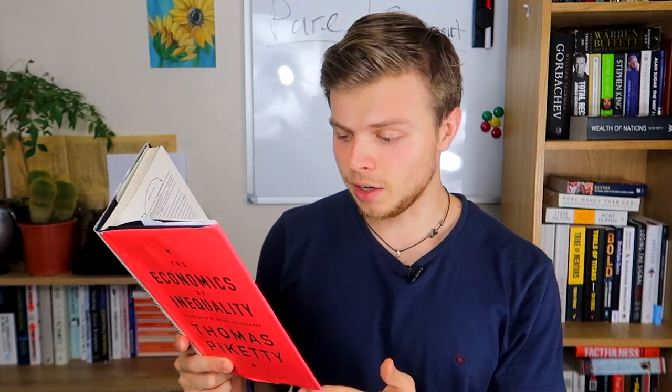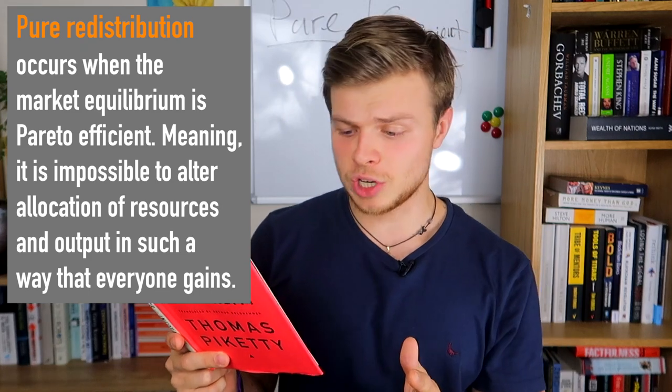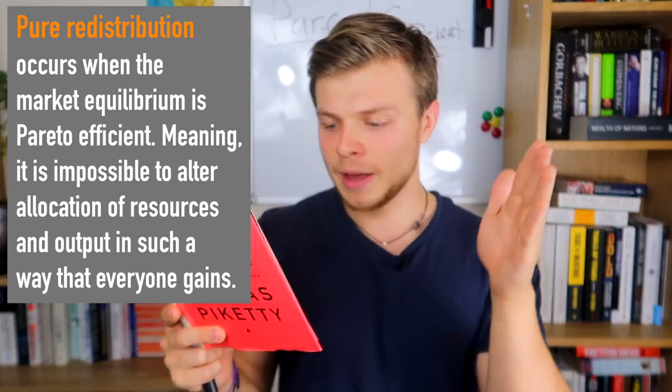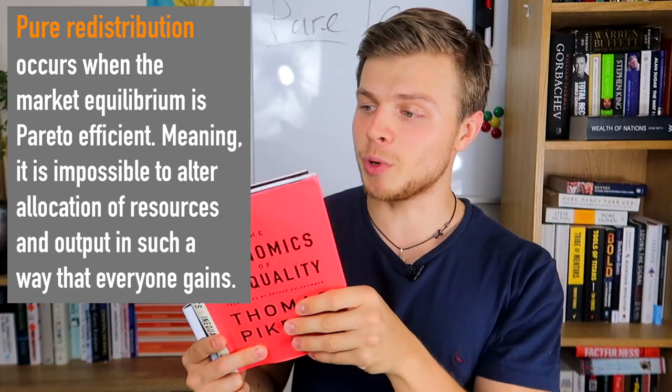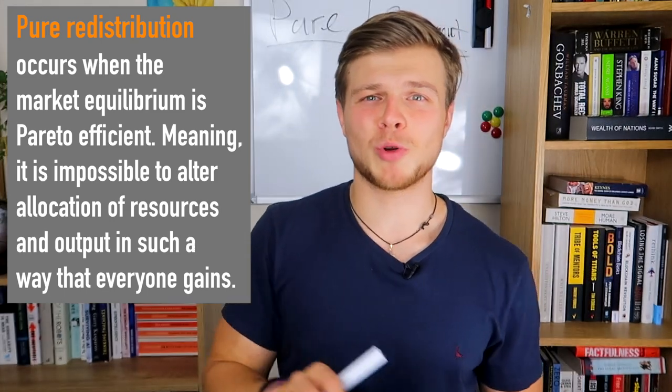The definition of pure redistribution given by Piketty is that it occurs when the market equilibrium is Pareto efficient, meaning that it is impossible to alter allocation of resources and output in such a way that everyone gains. You don't really have to know those terms — Pareto efficiency, market equilibrium even. Basically, what it means is that the market is already in a position where you cannot adjust anything for everyone to gain. This is what is meant by pure.